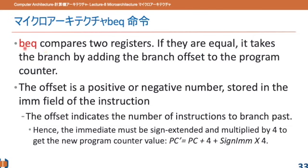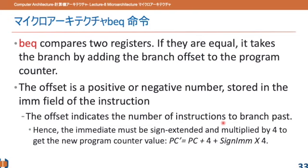Branch if equal compares two registers. If they are equal, it takes the branch by adding a branch offset to the program counter, jumping to a new PC. Typically the program counter is incremented by 4 after every instruction, but when BEQ finds two registers equal, it jumps and follows the offset from the program counter. The offset is a positive or negative number, meaning the program can jump either upward or downward based on whether the value is positive or negative.